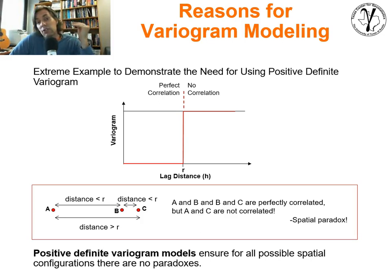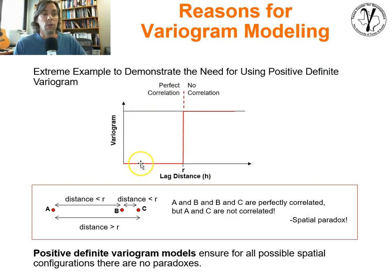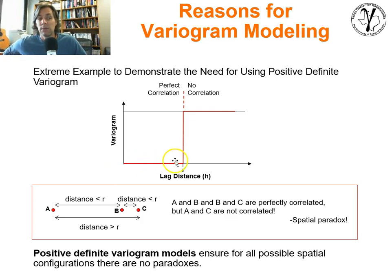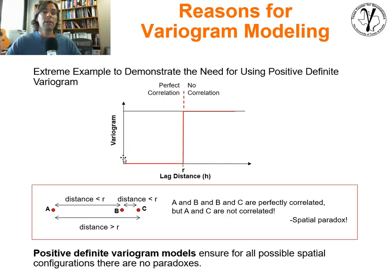Many of my students struggle with the concept of a spatial paradox, so I put together a very simple example. This is kind of cartoonish, but it illustrates the potential problem. Let's give ourselves an extreme example to demonstrate the need for positive definite variogram models. My variogram model says you have a variogram value of zero up to a distance r, and then at that point it jumps all the way up to a variogram value equal to the sill. That's a model with perfect correlation up to distance r, and beyond distance r, no correlation.